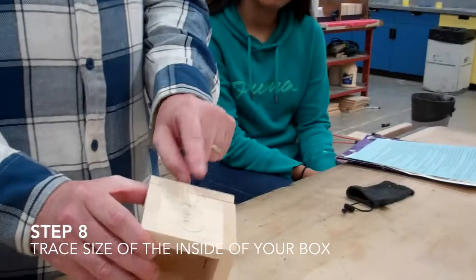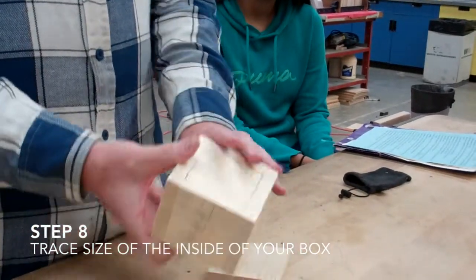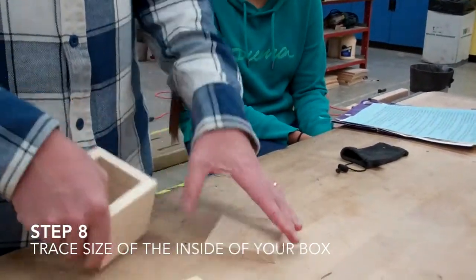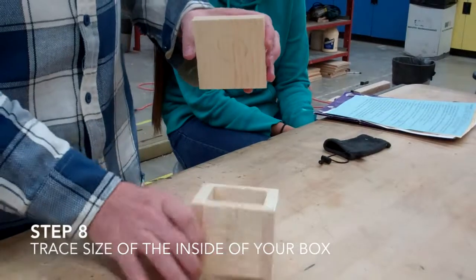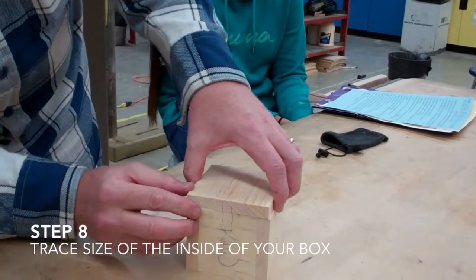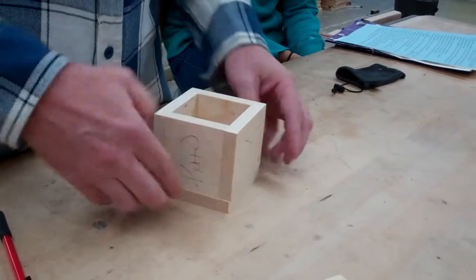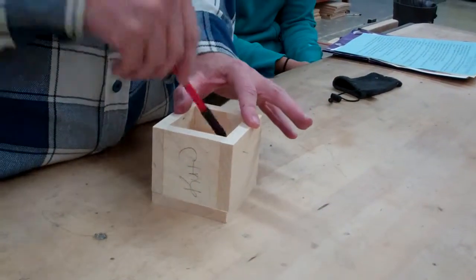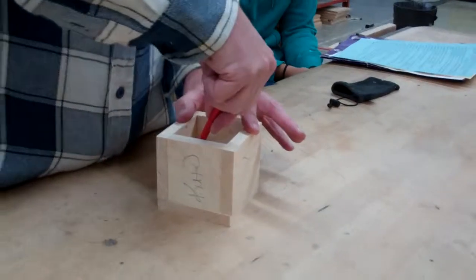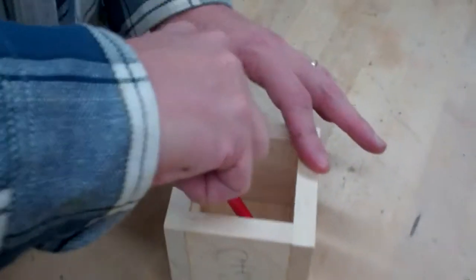Once that fits, you want to have this traced so those two lines line up, but we want to pop that out first. Pop that out, line up those two lines, then turn it upside down. You're trying to get all the sides even before you trace. Then trace on the inside. That's where that piece is going to be glued.